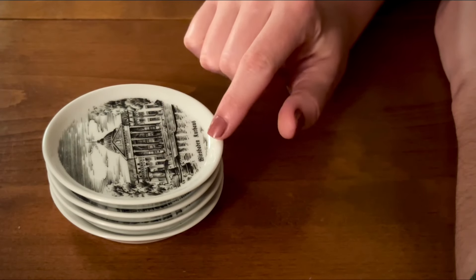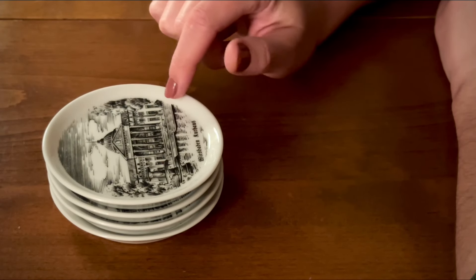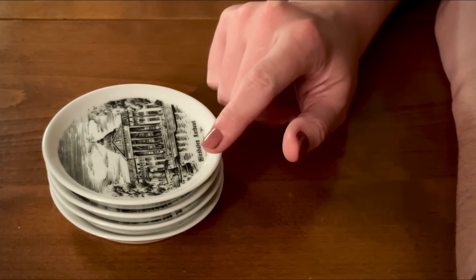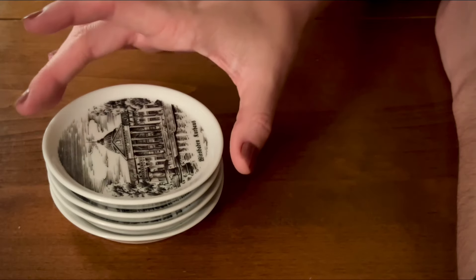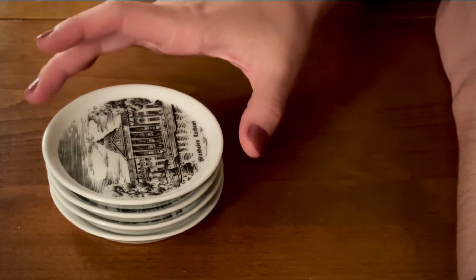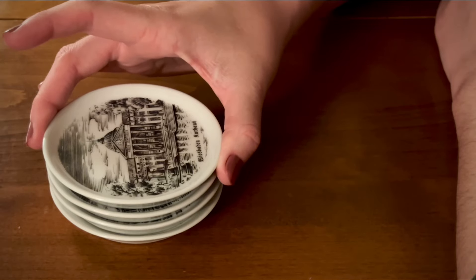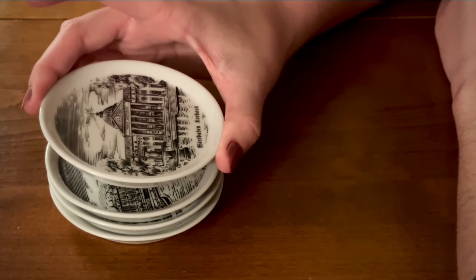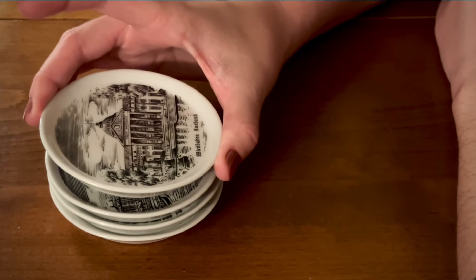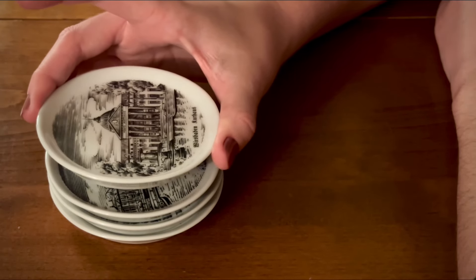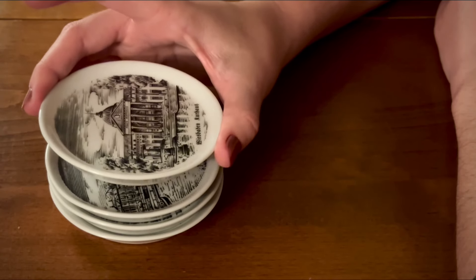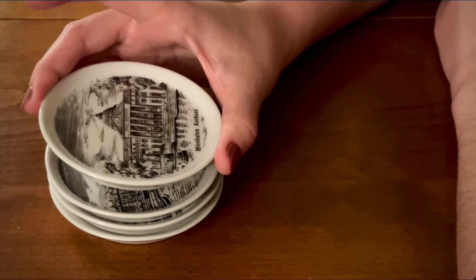I think the Wiesbaden Kurhaus is one of the most beautiful buildings in downtown. It's got two fountains in front of it. Only one is depicted in this picture. But it's everything from, I believe there's an opera house in there, but it's also a casino. At least it was. I'm not sure if they've changed anything in the past couple years.